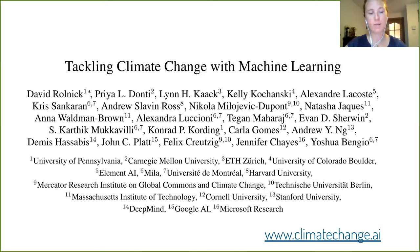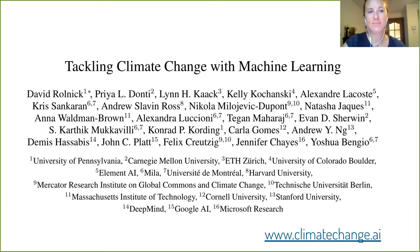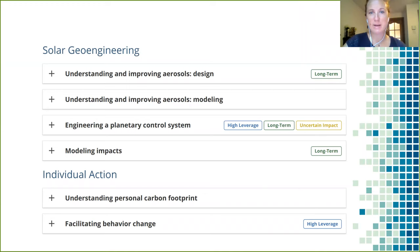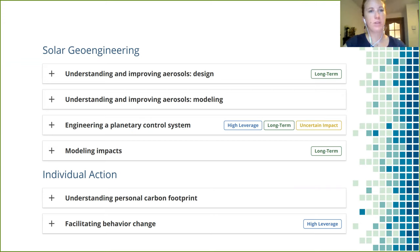We had people from all over the world contribute to the paper, including seminal members of the AI community such as Yoshua Bengio, Andrew Ng, and Demis Hassabis. All these people who have a lot of clout in our domain contributed, and we wrote this almost 100-page paper about all the different ways in which machine learning can help. A major chunk of the work was actually figuring out what already exists and what technologies are more or less mature.